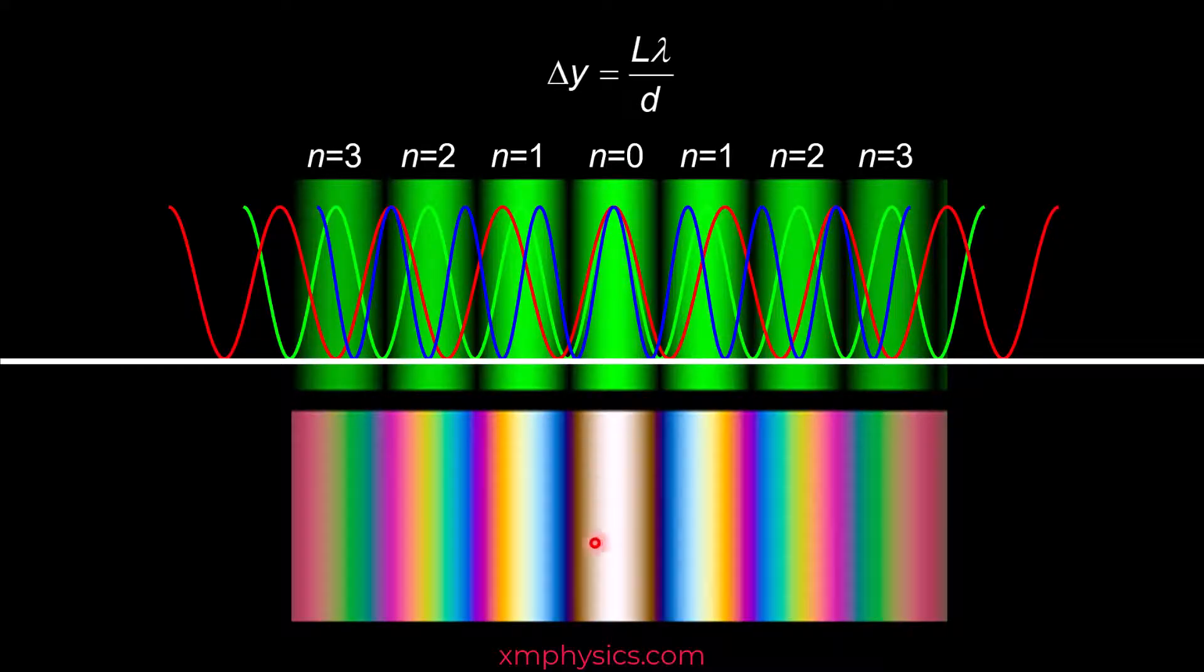But notice at the two ends, you have some kind of reddish tinge, right? That's because you got more red than the other color lights here. Because here you already have the dark fringes for the shorter wavelengths. The blue, the green, that's roughly where the dark fringes are. But the red has not quite hit its dark fringe. That's why there's a bit of reddish tinge on these two sides.